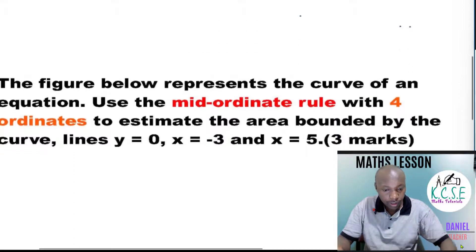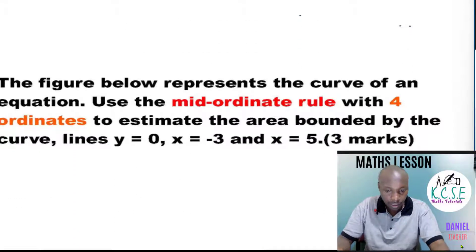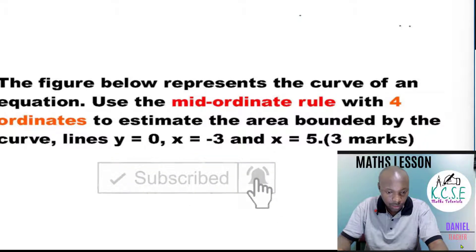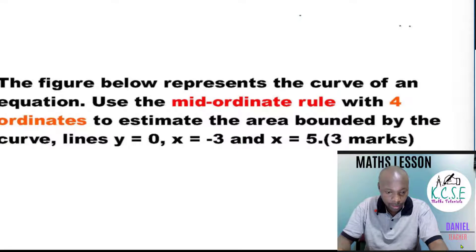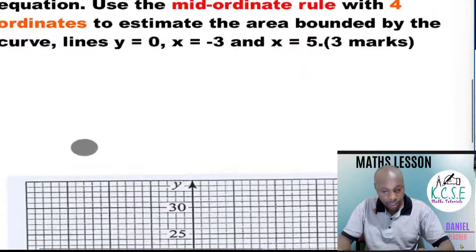The figure below represents the curve of an equation. Use the mid ordinate rule with four ordinates to estimate the area bounded by the curve, the line y equals zero (which is the x-axis), x equals negative three, and x equals five. Three marks.